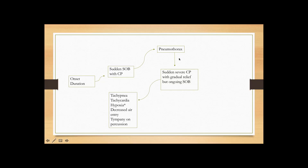Physical exam signs in pneumothorax include tachypnea, tachycardia, and hypoxia — if these are causing hemodynamic instability with really high respiratory rate and hypoxia, definitely think about pneumothorax. On lung exam they have decreased air entry on the side of the pneumothorax, which is a hallmark finding. When you percuss their lungs, they usually have tympany. These two are very special physical exam findings for pneumothorax, and based on exam and history you can make the diagnosis.